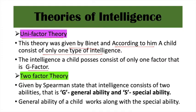Next is two-factor theory, which was given by Spearman. Spearman says that intelligence has one general ability, plus in each specific field there is another factor — a special ability. Each child has a unique capability called special ability, meaning one child may be good at music or art, another at science experiments or games. So general intelligence is present in all abilities, plus specific intelligences also exist in the human mind.